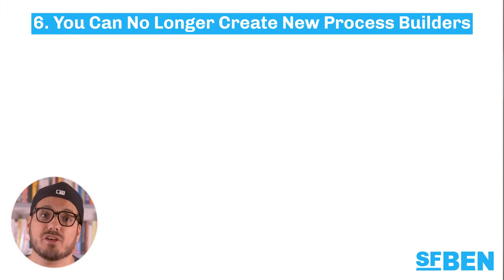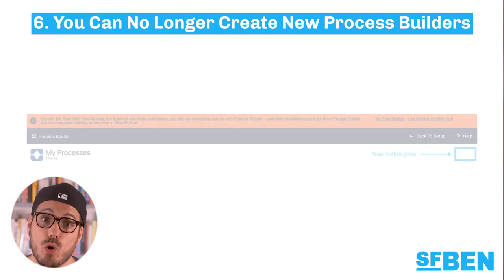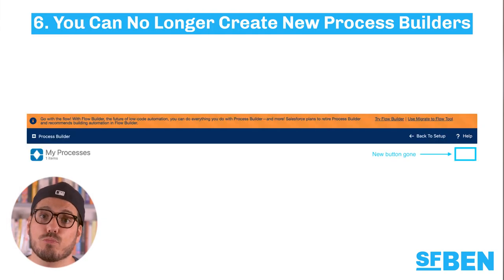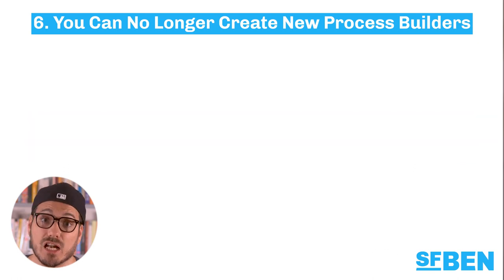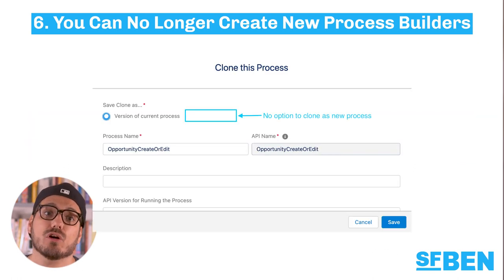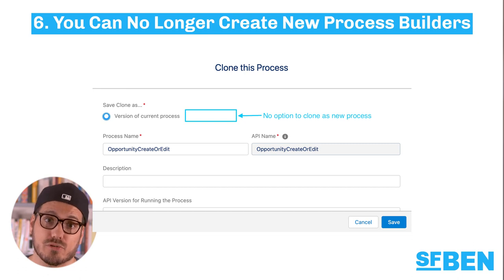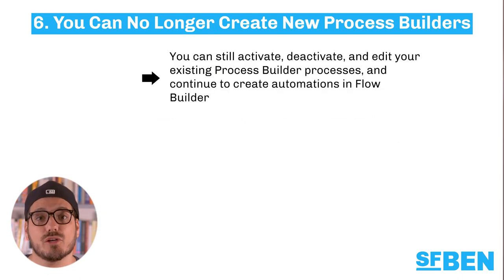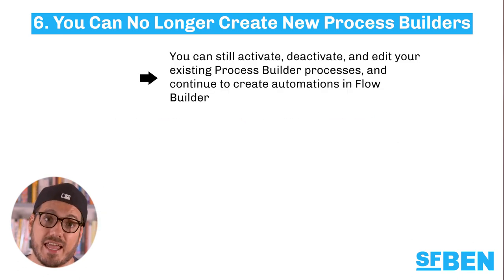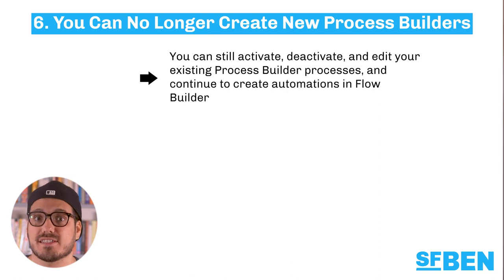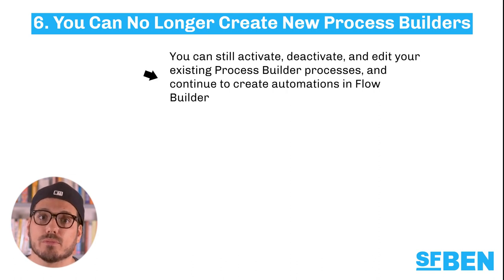As per the timeline, and just like with workflow rules, you can no longer create new process builders. Interestingly, unlike with workflow rules, you cannot clone an existing process builder as a new process. You can still activate, deactivate, and edit your existing process builder processes and continue to create automations in Flow Builder.